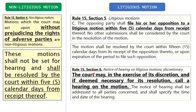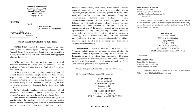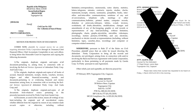Let's go to Section 6 — ito yung importante. Under the old rules, litigious motions were heard. But now, under the 2019 Rules, it is discretionary on the part of the court to conduct a hearing. The court may, in the exercise of its discretion and if deemed necessary for its resolution, call a hearing on the motion. Kaya ngayon sa practice, you will see many pleadings that do not contain a notice of hearing. Discretionary na ang pag-ihear ng litigious motion under the 2019 Rules.